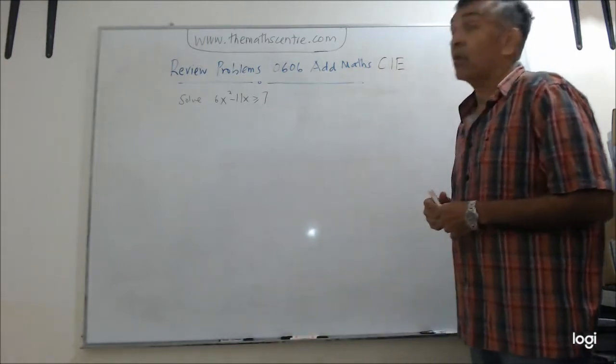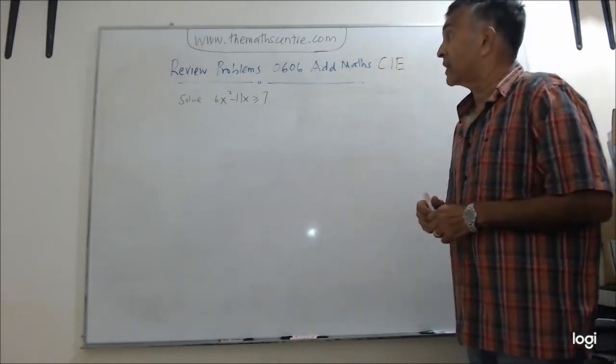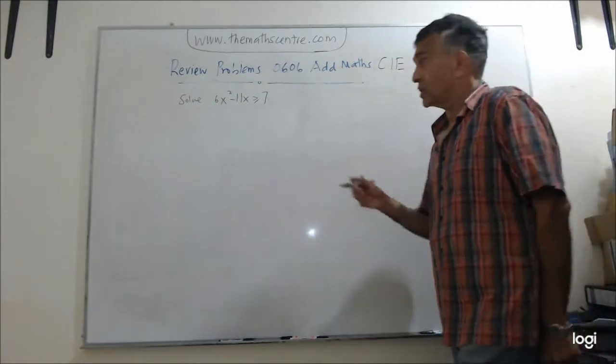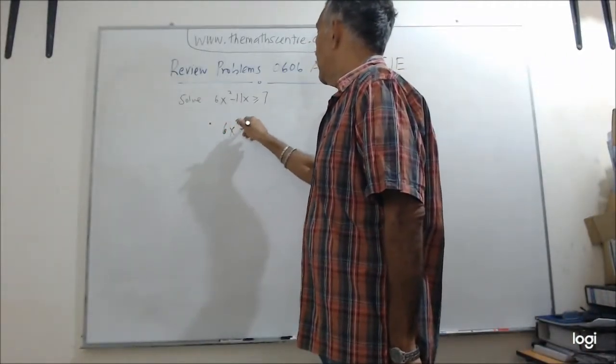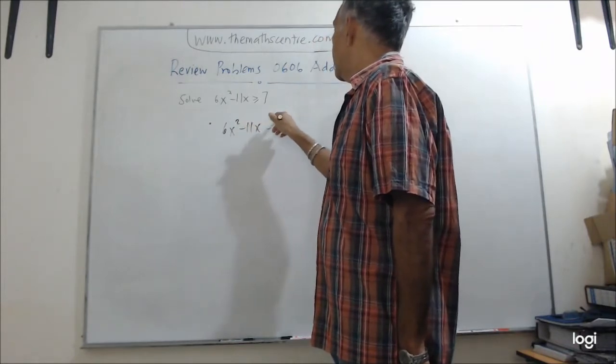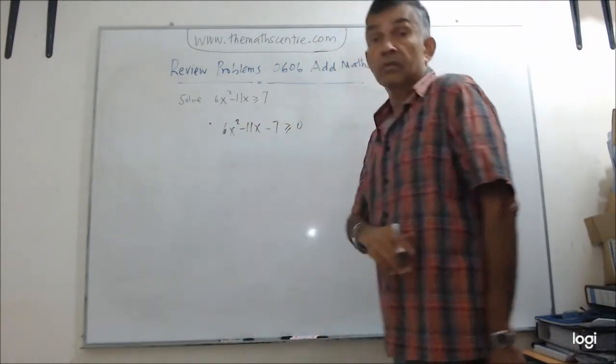We have a quadratic inequality here: 6x² - 11x ≥ 7. So what's your first step? Let's write 6x² - 11x - 7 ≥ 0. Settled.